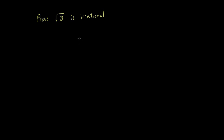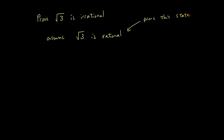We're going to start with the fact that square root of three is rational. So what are we doing if we're trying to prove it's irrational? We're going to assume that it's rational and then prove that this statement is false. If we can prove that 'square root of three is rational' is false, then we can say it's irrational, because a number is either rational or irrational — if it's not rational, it's irrational.